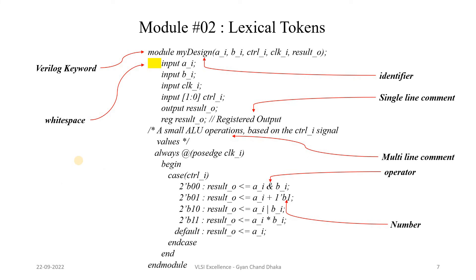Now let's understand all of the Verilog lexical tokens we studied so far through a Verilog HDL example. Here is a Verilog HDL code where I have tried to differentiate the various lexical tokens. You can see that 'module' is a Verilog keyword. There is a white space here, and 'my_design' is nothing but an identifier — it is a user-defined name. We can also see a single-line comment, a multi-line comment, Verilog operators, and a number.